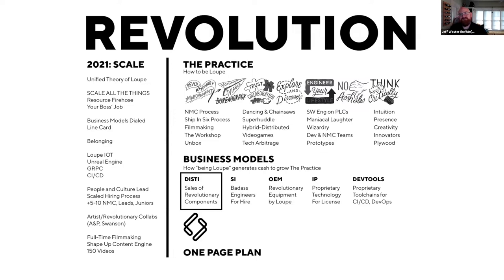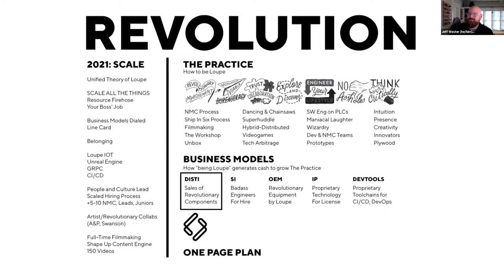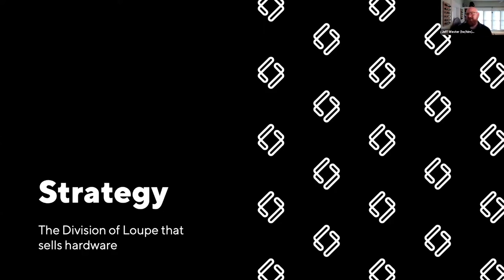Today we're talking about the next phase, which centers around the Disti. In terms of Loop Industries, this is the division of Loop that sells parts and components and provides people with B&R technology. We understand that requires a unique strategy — even though those same customers may ultimately require some or all of the other business line services, there's been a long history of them buying a certain way. So in Loop fashion, we start with strategy.